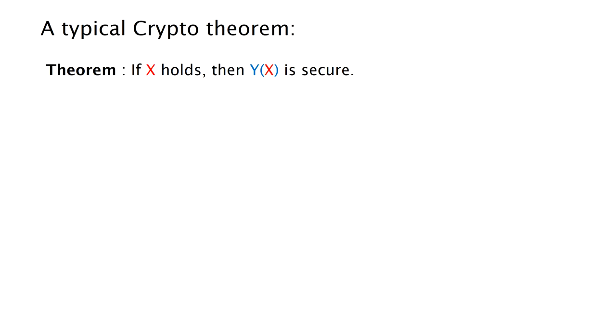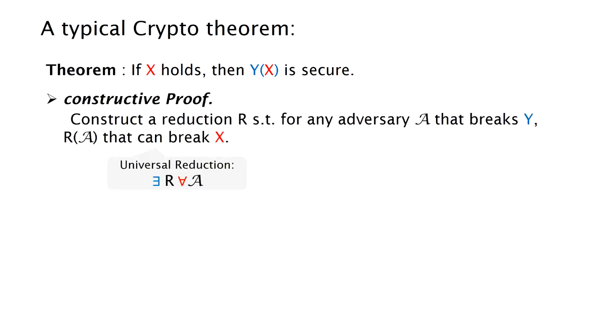A typical theorem usually states that if assumption X holds, then the construction Y is secure. We often prove such a theorem by a universal reduction where we simply construct a reduction R such that for any adversary A that breaks Y, reduction R can break the underlying assumption X.